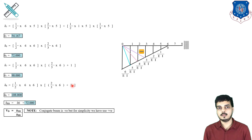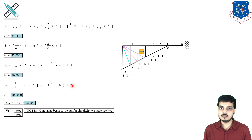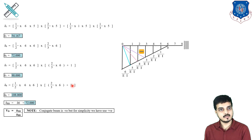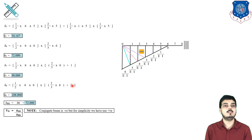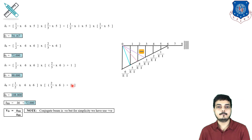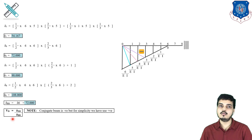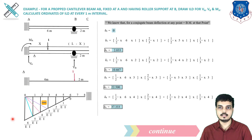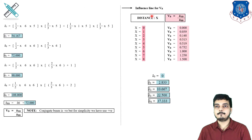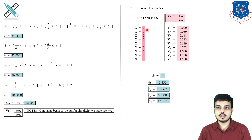Now we find delta VB, which is at the point of redundancy — point B, at 6 meters. So delta VB = delta 6 = 72. VB is calculated as delta_xB divided by delta_VB. We will find values of VB for points x = 0, 1, 2, 3, 4, 5, 6, 7, 8 at every 1 meter interval.